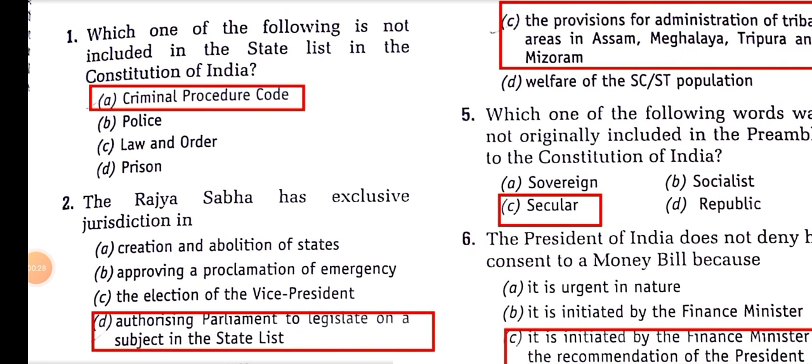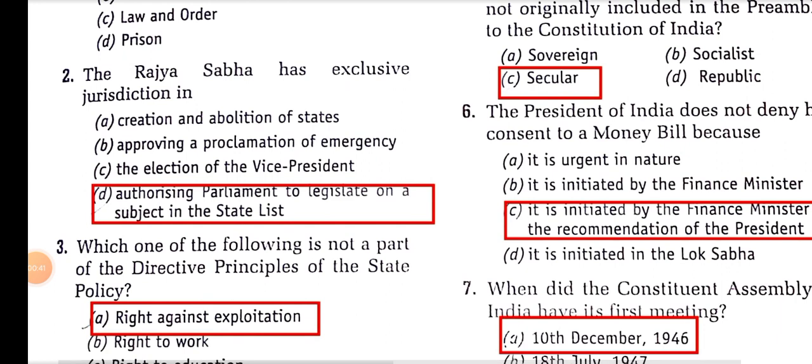The Rajya Sabha has exclusive jurisdiction in authorizing Parliament to legislate on the subject in the state list, because Rajya Sabha is the House of States and there is a representation of states in there.